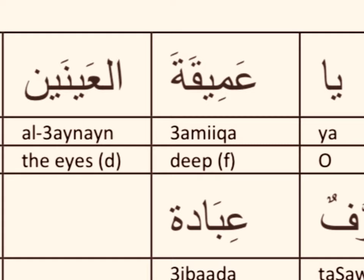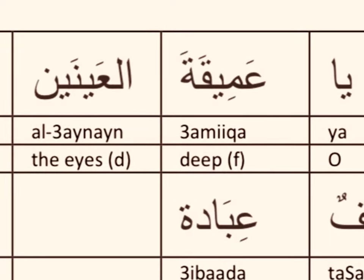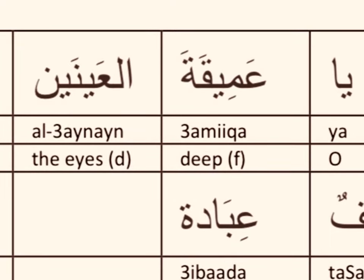'Amiq' means deep, and 'amiqa' is the feminine form. So 'amiqa al-aynayn' — in 'al-aynayn' we have the word 'a'in', which means eye, and 'a'inayn' is two eyes, the dual form.